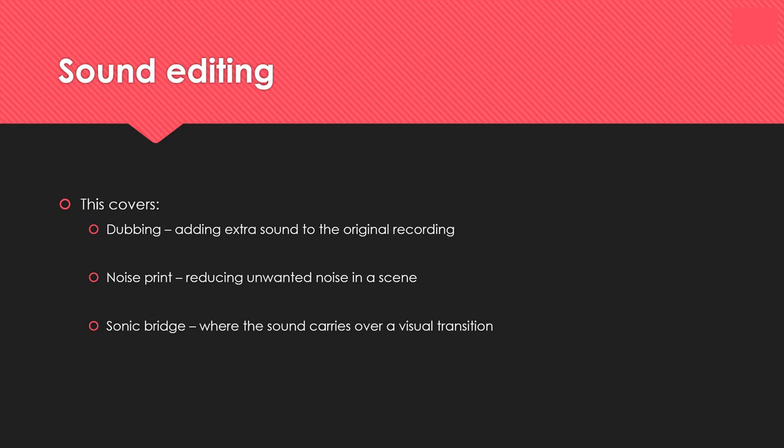There are a few different sound editing techniques you could use. Dubbing is the term used to add extra sound to the original recording. Noise print is when you remove any unwanted noise in a scene. A sonic bridge is where sound carries over a visual transition. The best example is in Saving Private Ryan, where the camera goes close into a character's eyes to show emotion and you can hear waves crashing on the beach — and the very next scene is that scene with the waves, using the sound to bridge the two scenes together.